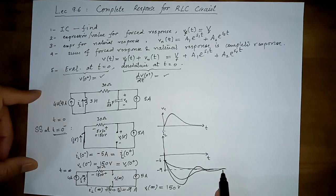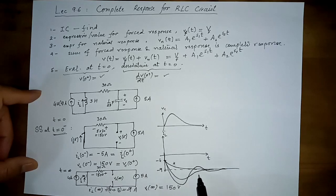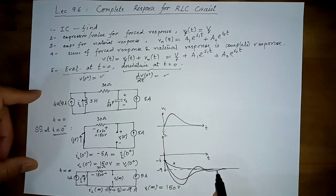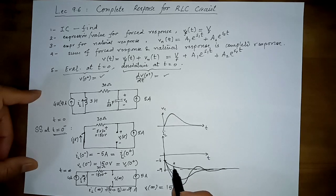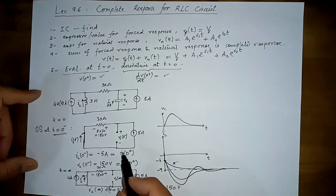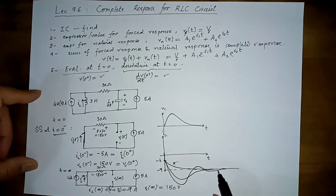There may be overshoot, ringing, and then settling down. This is because there are two energy-storing elements exchanging energy — unlike RL or RC circuits with one energy-storing element, which cannot overshoot the settling value. Depending on what you take as the output, you can get different kinds of waveforms, and it all makes perfect sense.